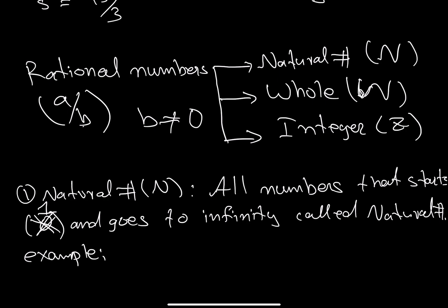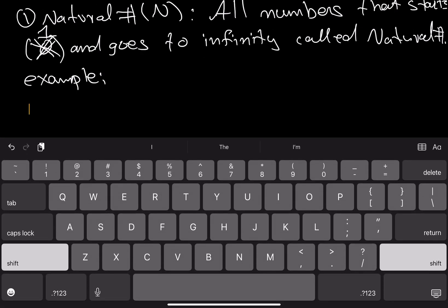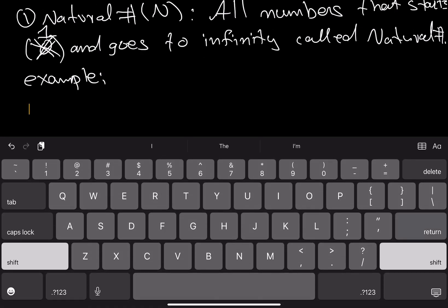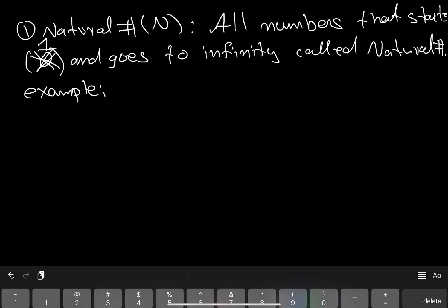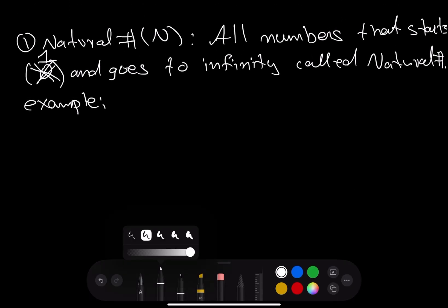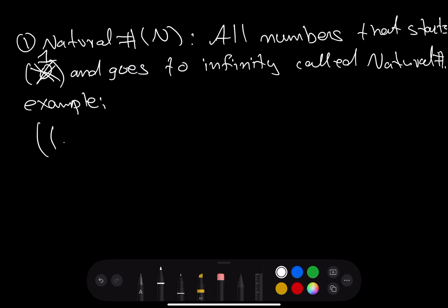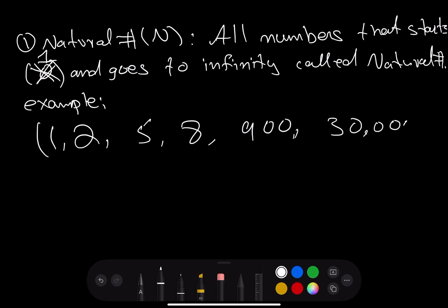Natural numbers, symbolized with N, are all numbers starting from 1 going to infinity. Examples include 1, 2, 5, 8, 900, 30, 1000, and more — these are called natural numbers.